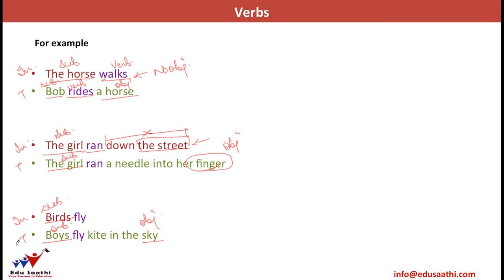So thus, till now we've understood that if the verb has an object attached, it will be treated as a transitive verb. But if it does not have an object attached, it would be an intransitive verb.